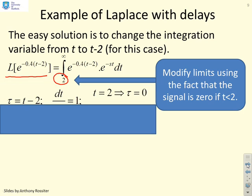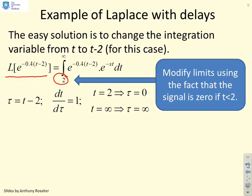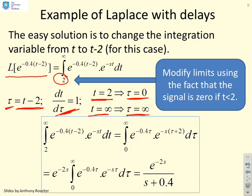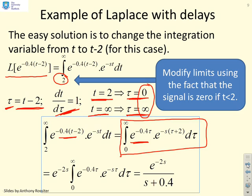Now, what I'm going to do next is do a variable transform. I'm going to define a new variable τ as t minus 2. And therefore, dt/dτ is 1. Hopefully, that's straightforward. If t equals 2, then τ is 0. If t is infinite, then τ is infinite. So if I do this variable substitution, my integral is going to change to become the following one here. You'll see I now get the integral between 0 and infinity. That's because of those two limits there. I get e^(-0.4τ) instead of e^(-0.4(t-2)). And I get an e^(-s(τ+2)), and then dτ.